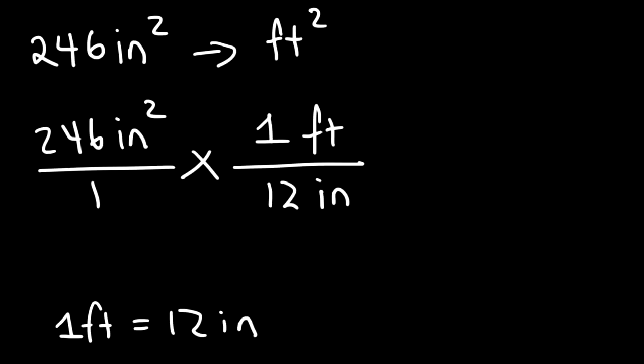Therefore, we need to do something. What we need to do is square the conversion factor. We'll need to divide it by 12 inches two times. And so now inches squared will cancel, giving us square feet.